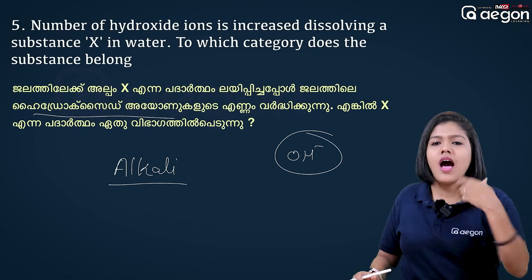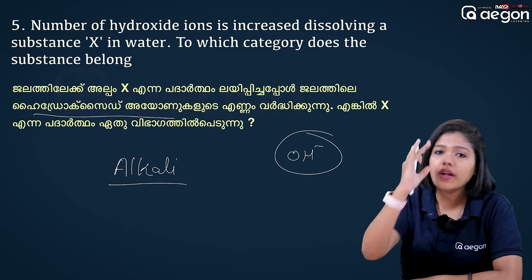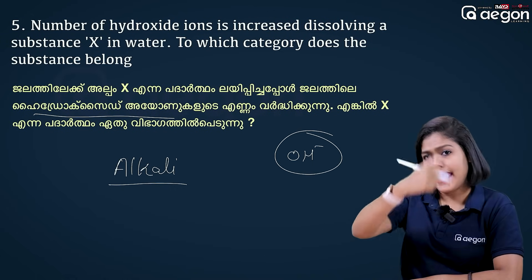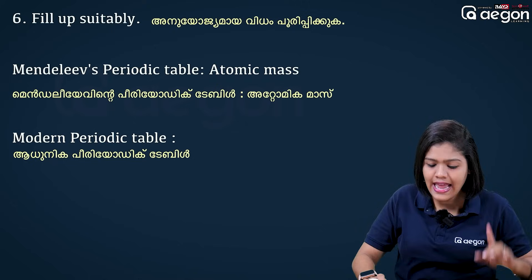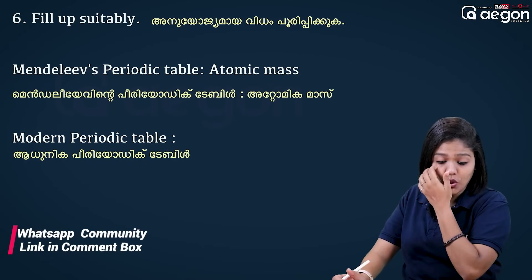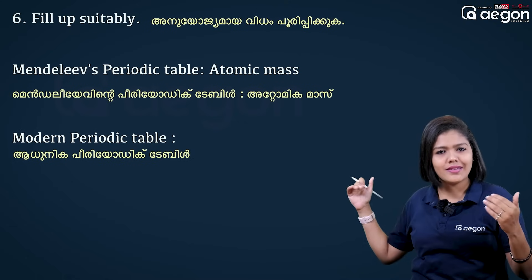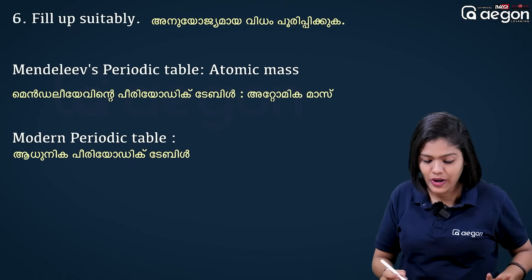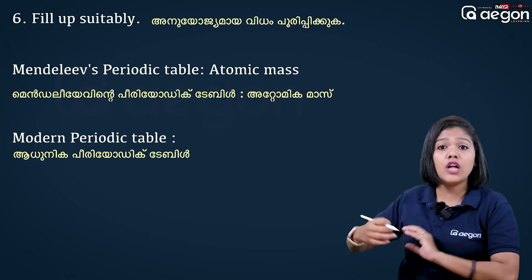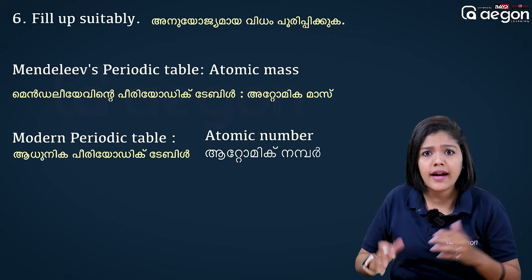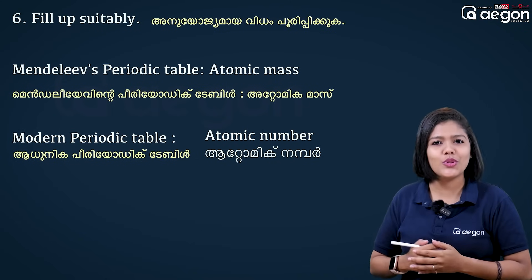OH- ion is the hydroxide ion. We can also use H+ ions to distinguish acids and bases. The first step is to use Mendeleev's periodic table based on atomic mass, while the modern periodic table uses atomic number.